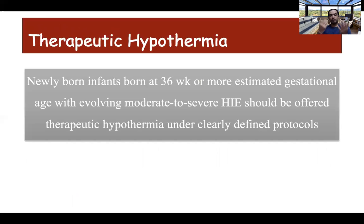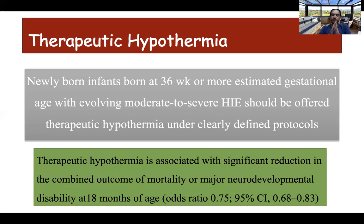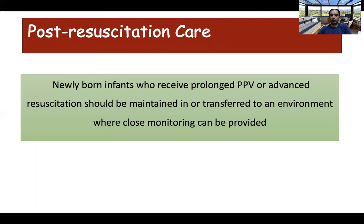Excessive administration of epinephrine has been shown to be associated with hypertension and tachycardia. For late preterm and term babies with moderate to severe hypoxic-ischemic encephalopathy (HIE), therapeutic hypothermia should be considered under strict protocols and follow-up plans. Therapeutic hypothermia is now the treatment of choice for HIE and has been shown to decrease the incidence of mortality and major neurodevelopmental disability at 18 months of life, reducing the combined outcome of mortality and neurodevelopmental disability by almost 25 percent.